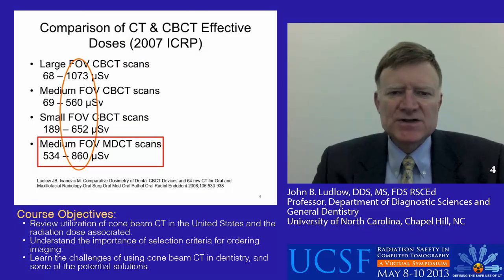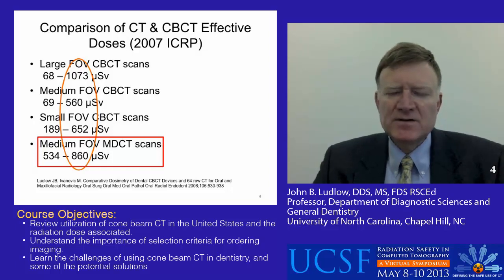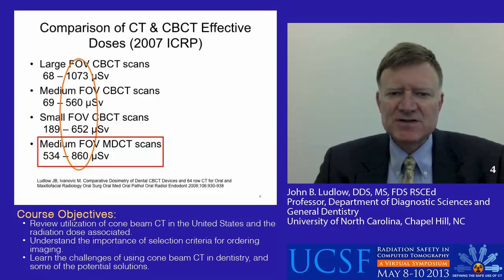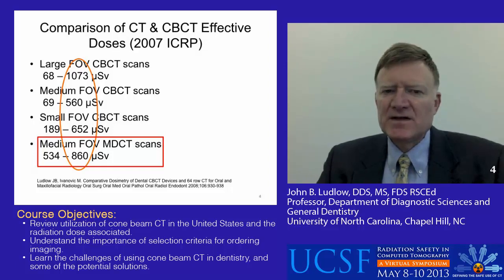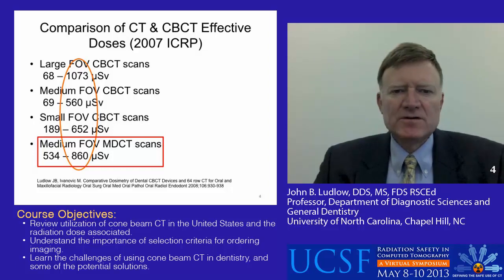Looking at the dosimetry of these different devices, when we divide them by rough volume sizes — small, medium, and large — and compare them with state-of-the-art MDCT dosimetry, we see that first there's a significant range of dose produced by these devices. Similar fields do not provide similar doses; these are dependent on other technical factors. But what we do see is that the high end of our dose ranges are comparable with doses encountered with state-of-the-art medical CT imaging.